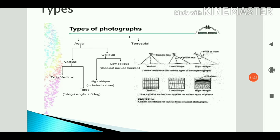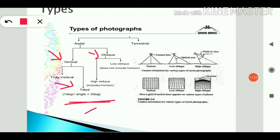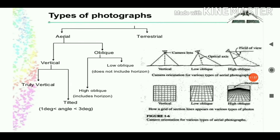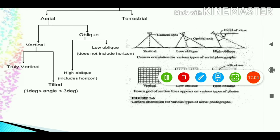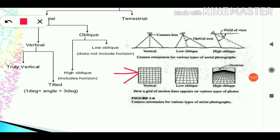Looking at the types of photographs: aerial photographs include vertical and oblique types. If the angle of camera axis to the plumb line is less than 3 degrees it is a tilted photograph; if the angle is more than 3 degrees it is called an oblique photograph. The diagram shows vertical, low oblique, and high oblique camera orientations and how their resulting photographs differ.